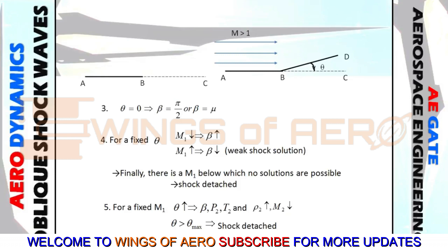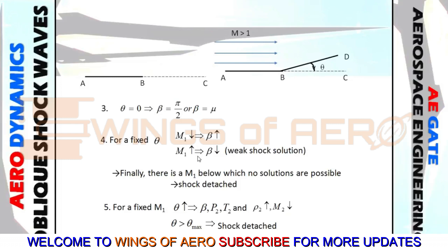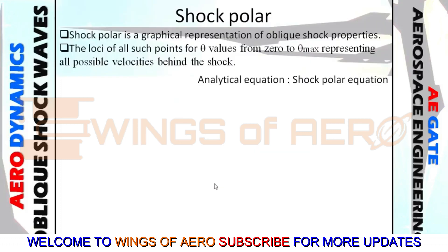For a fixed theta, if we consider Mach number M1 decreasing from 2 toward 1, the beta value will increase. Conversely, if we increase M1 from 2 to 3, the beta value decreases. Since beta is small in that case, we get a weak shock solution. These factors have been noted earlier.